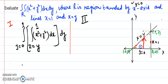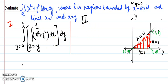Every time, when moving vertically through this region, the starting boundary is y equals 0. So the lower limit for y is y equals 0.